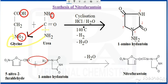Now we take 1-aminohydantoin and combine it with 5-nitro-2-furaldehyde. In the furan ring numbered 1 through 5, the second position has an aldehyde group and the fifth position has a nitro group. So this compound is called 5-nitro-2-furaldehyde, or 5-nitrofuran-2-aldehyde. By the addition of these two compounds, there may again be removal of one molecule of water.